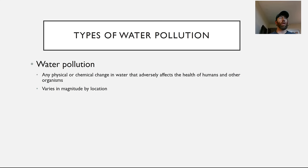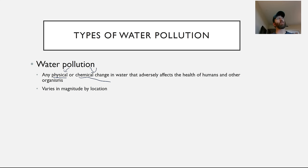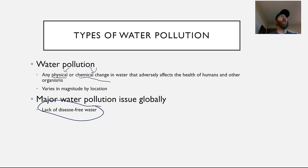Types of water pollution: when we talk about water pollution, we're talking about a physical or chemical change in water that adversely affects the health of humans and other organisms. The amount and severity of water pollution varies by magnitude and location. A physical change is not the same as a chemical change — we're not always talking about chemicals being added to water. We could be talking about a change in the water's temperature, which also affects dissolved oxygen levels, metabolic rates, respiration in fish, and so on.